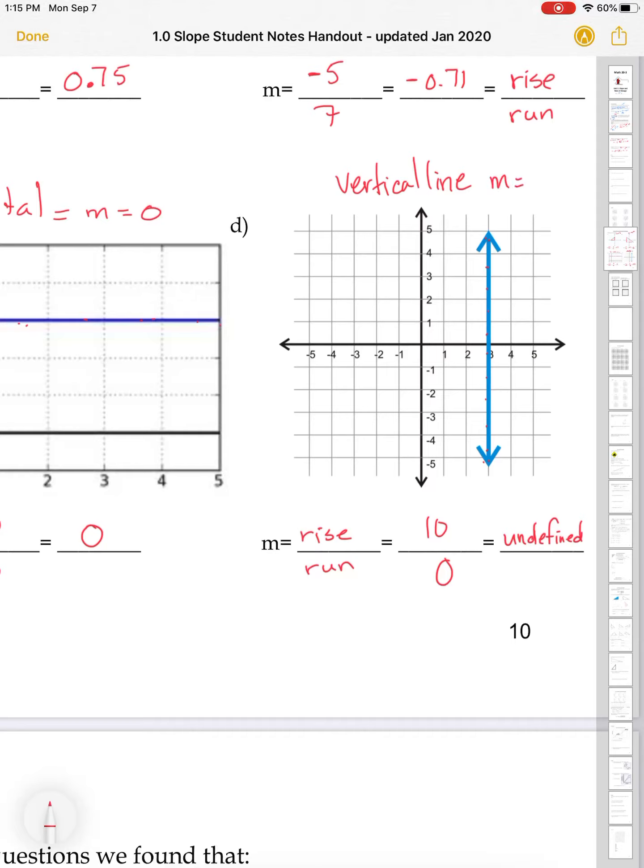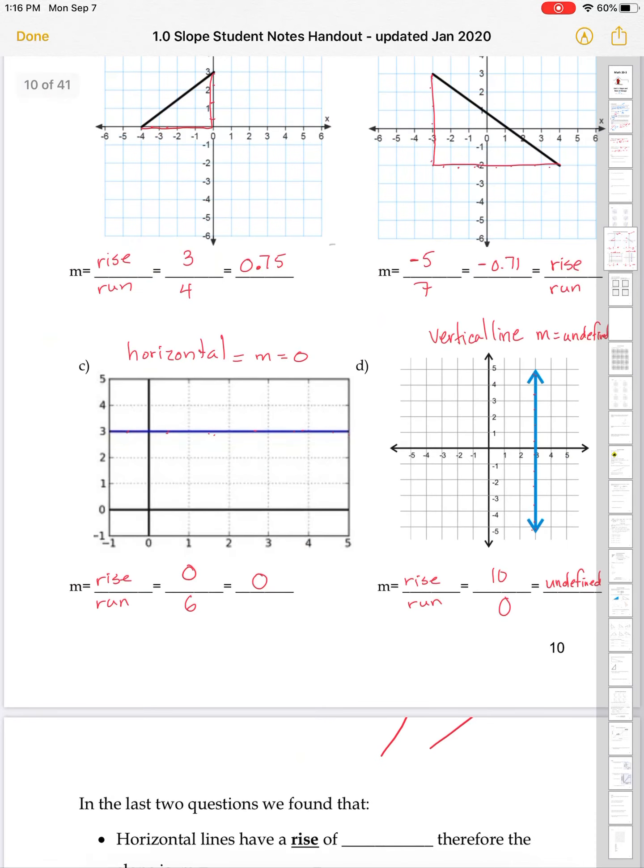So any time you have a vertical line, the slope equals undefined. And you can do it figuring it out, putting in the 0, and getting that error button on your, or the error notice on your calculator, and that should remind you that it's undefined. Or you can just remember, vertical lines are undefined.